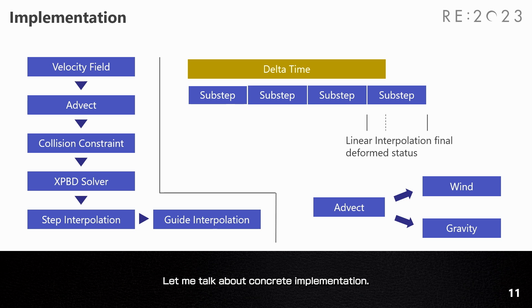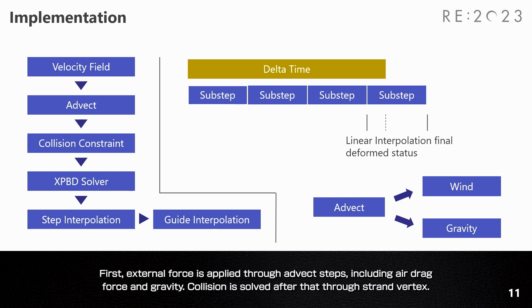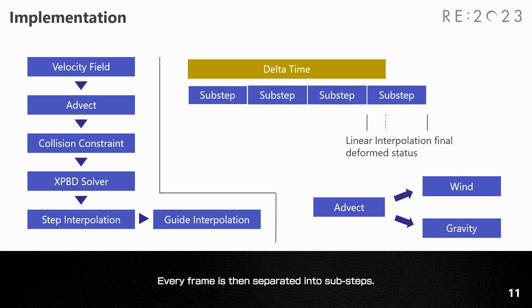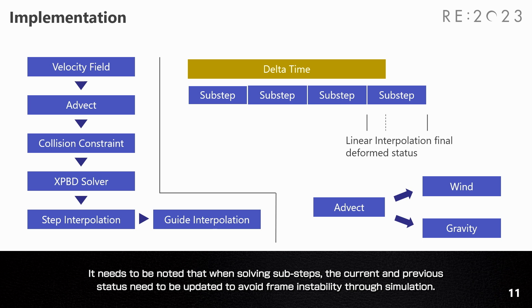For concrete implementation, similar to other PBD methods: first, external forces are applied through an advect step, including air drag and gravity. Collision is solved after that for each strand vertex. XPBD constraint projection is iteratively applied to solve the system. Finally, guide interpolation is applied to propagate guiding strands to all strands. Every frame is separated into sub-steps, and the current and previous status need to be updated to avoid frame instability.